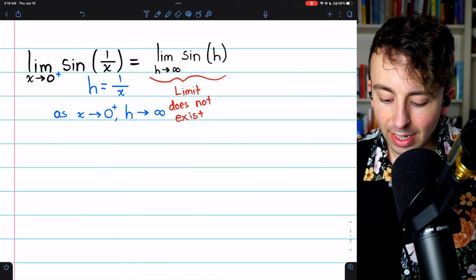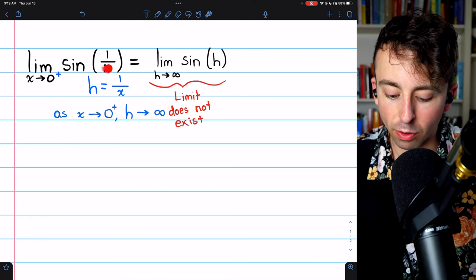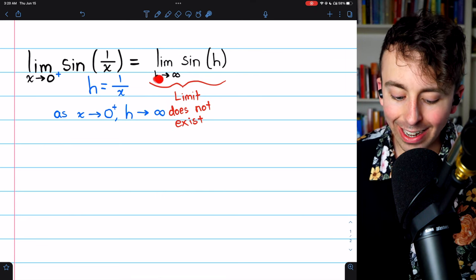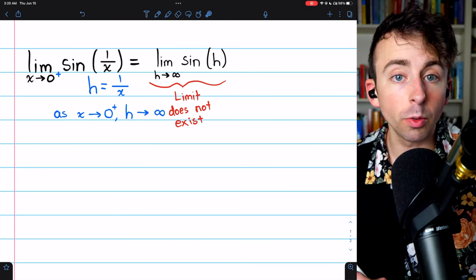we know is equal to the limit of sine of h, because h is 1 over x, with h going to infinity. Because as x approaches 0 from the right, h is going to infinity.